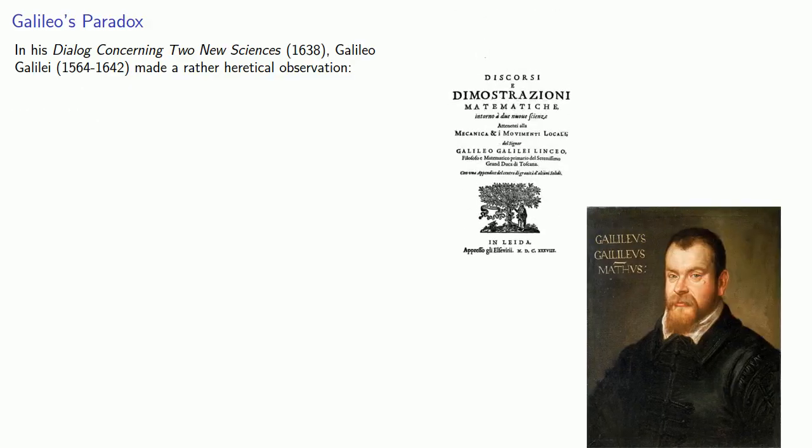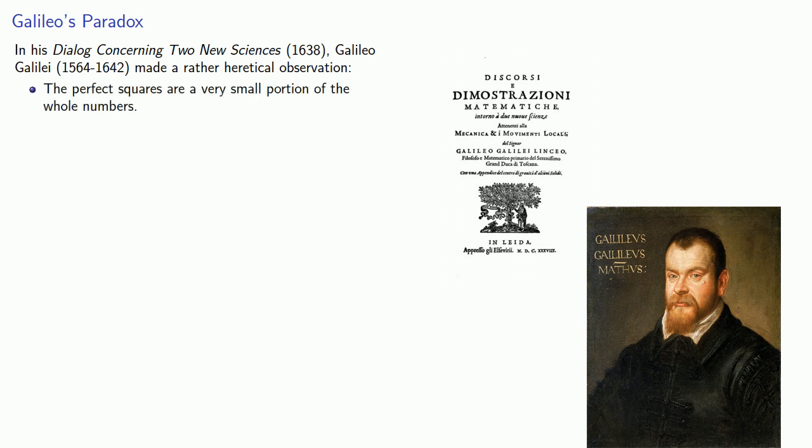In his dialogue concerning two new sciences, Galileo Galilei made a rather heretical observation. The perfect squares are a very small portion of the whole of numbers.